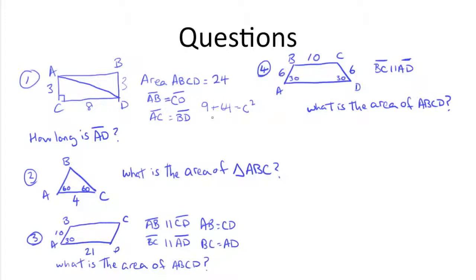Since that's the case, 9 plus 64 is 73 equals C squared, and C is equal to the square root of 73.